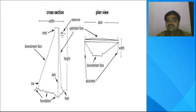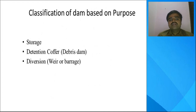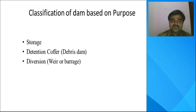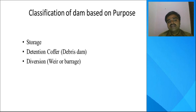The next major topic is the classification of dams based on purpose. There are three major classifications: first is storage dams, second is detention dams (also called debris dams), and third is diversion dams, weirs, or barrages.